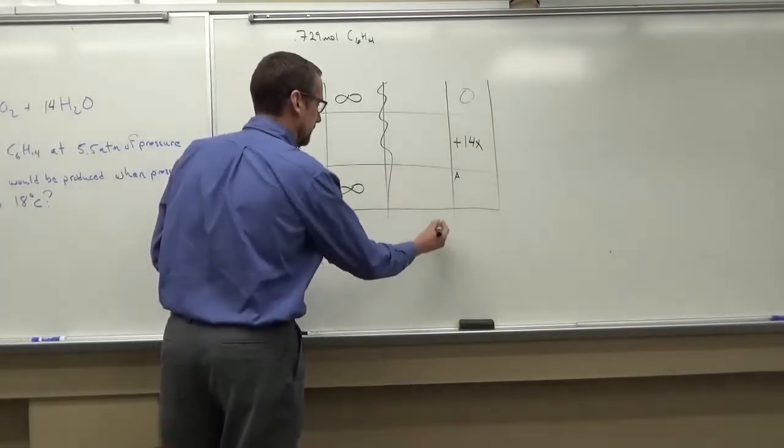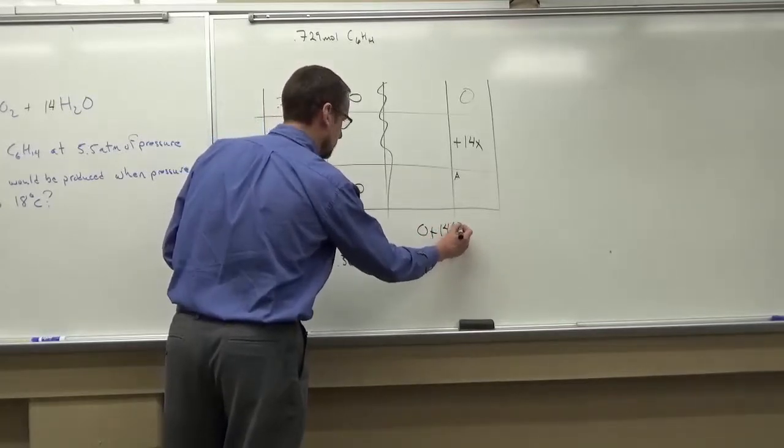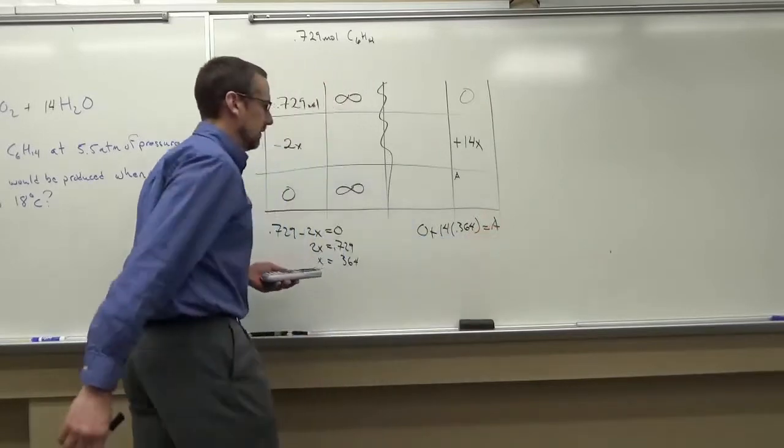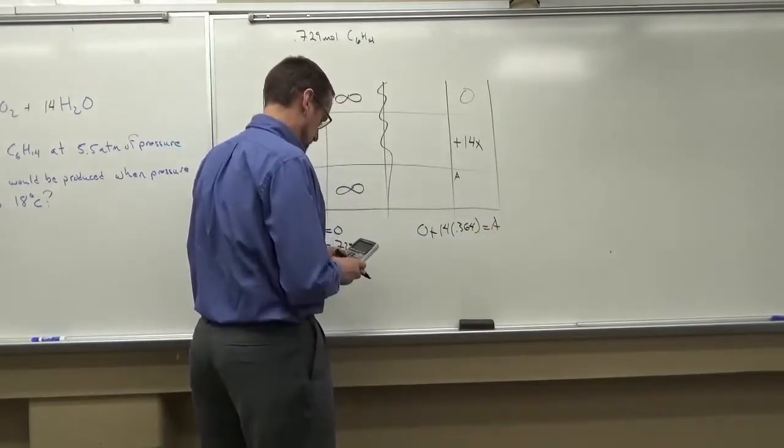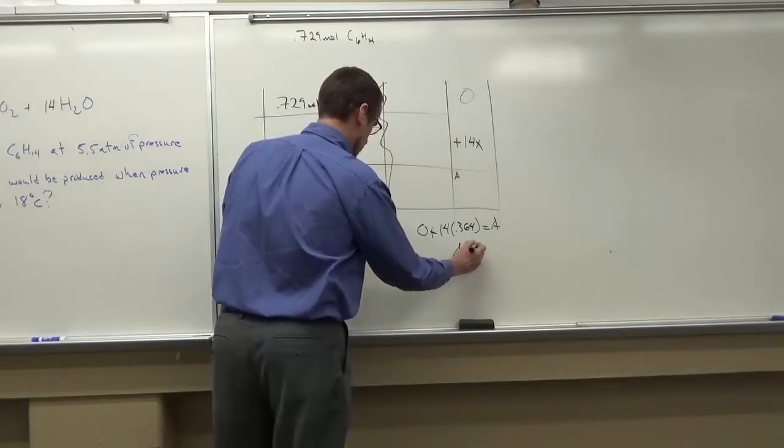Alright. So then I need to do zero plus 14 times 0.364 equals the after value. So after is going to equal 5.101.